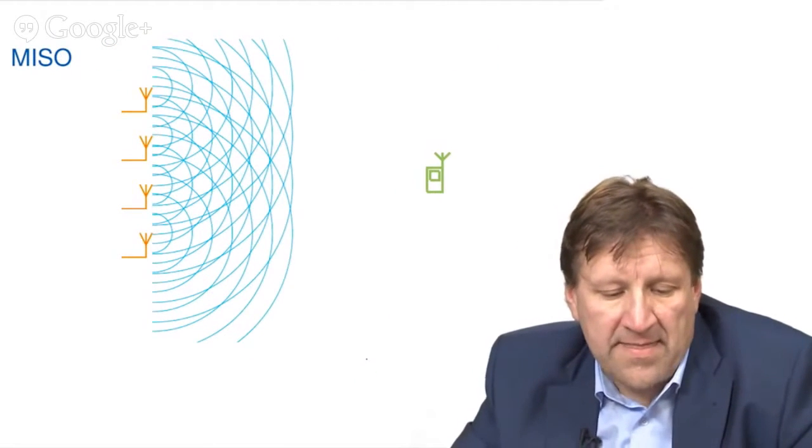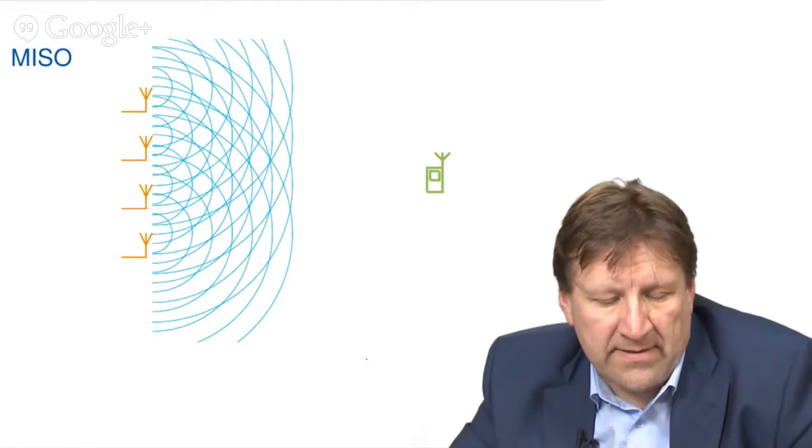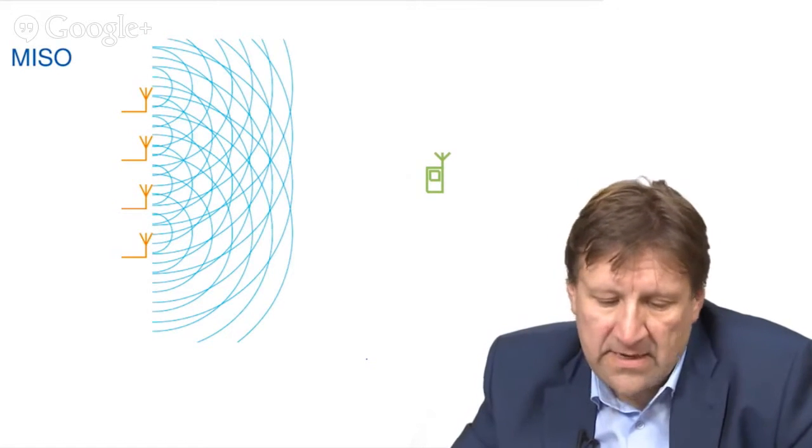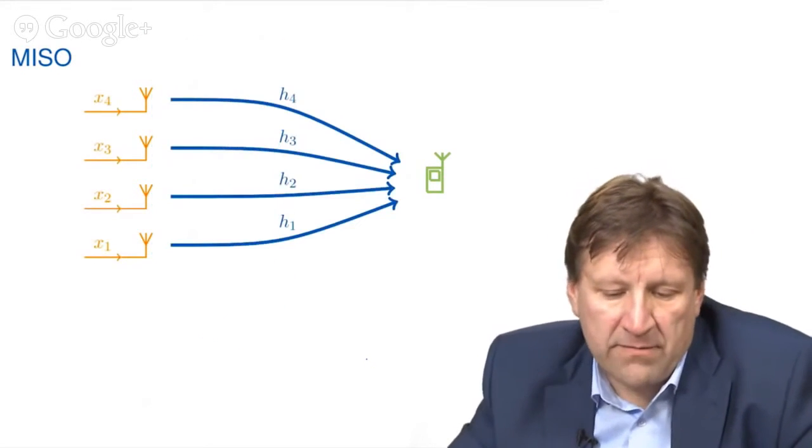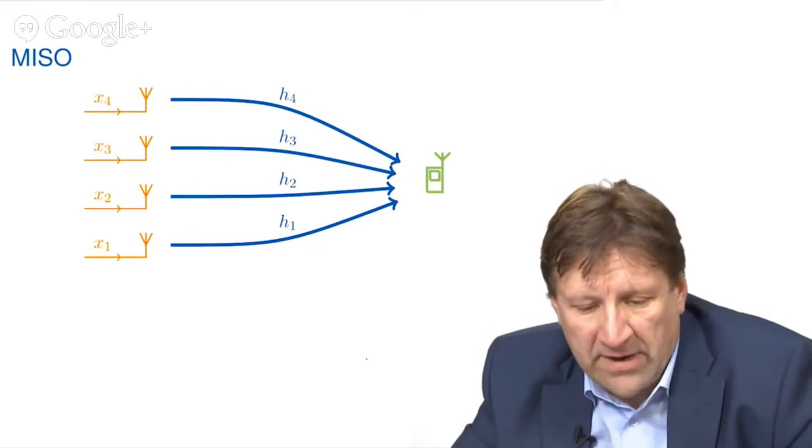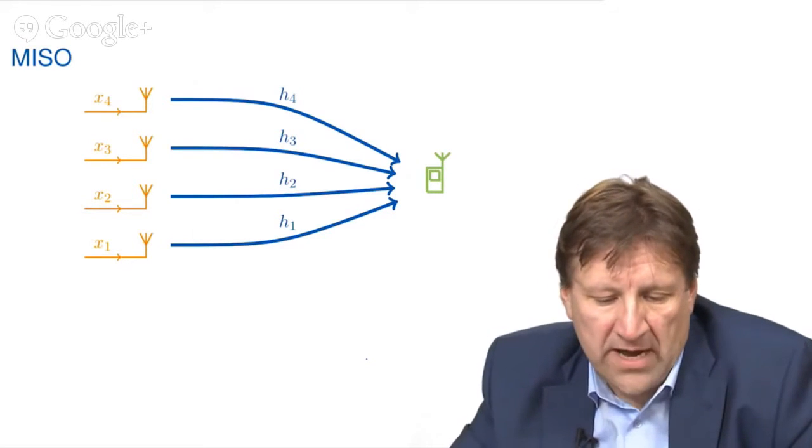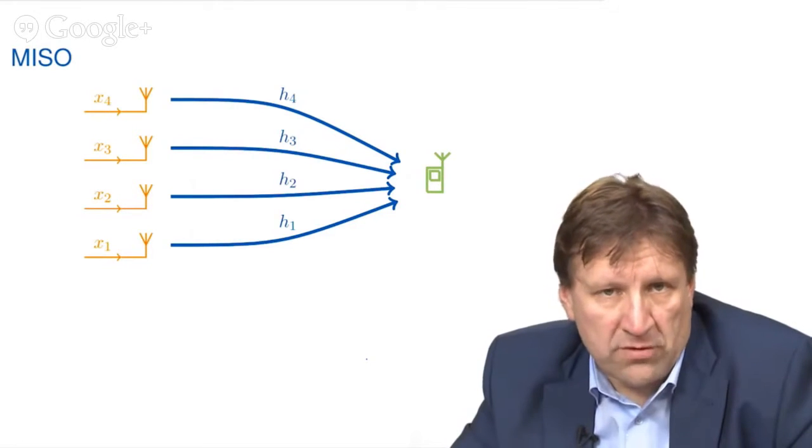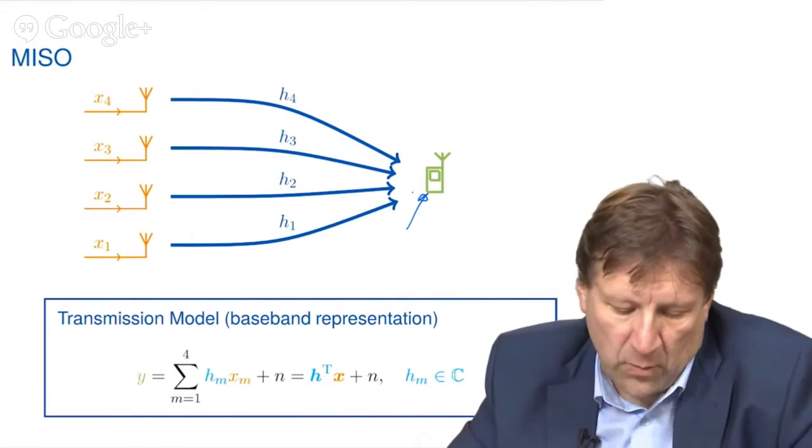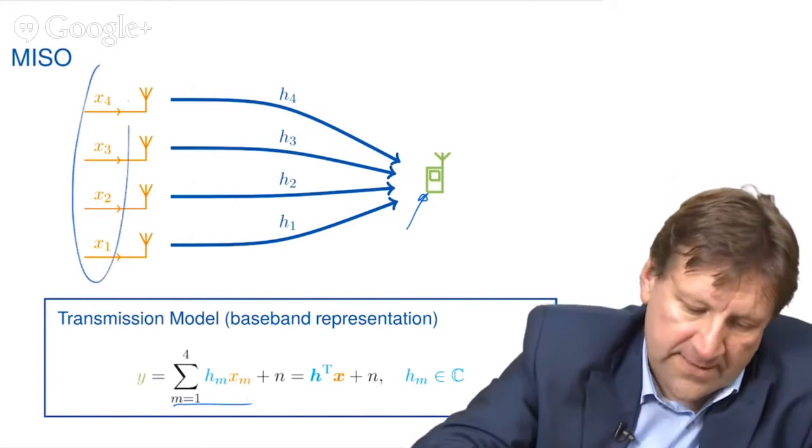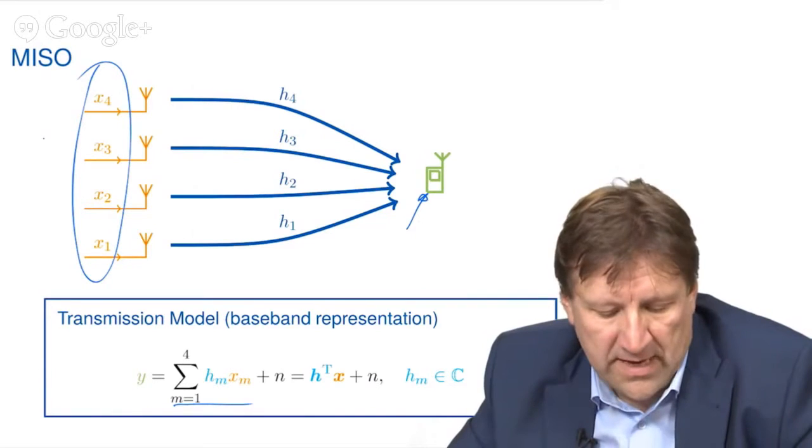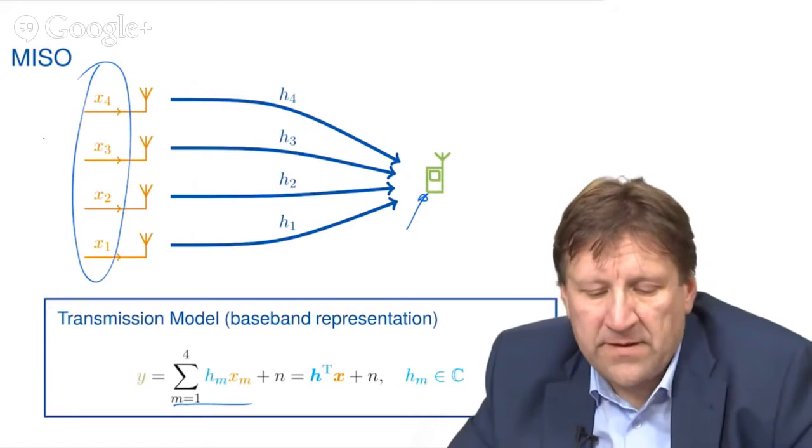One of the solutions to this problem is the deployment of multiple antennas at the transmitter, which is MISO, multiple input, single output. In order to study this in more details, we will replace this more abstract illustration by the following notation. Here, each antenna at the transmitter is linked to the antenna at the receiver and characterized by a complex number H1, H2, H3 and H4, which relates to a so-called baseband representation model. This also allows that we are able to describe the signal at the receiver, the signal Y, as a linear combination of the transmitted signals X1, 2, 3 and 4 at the transmitter, which arrives at the receiver with linear weights H1, 2, 3 and 4, which equals the respective channel coefficient.